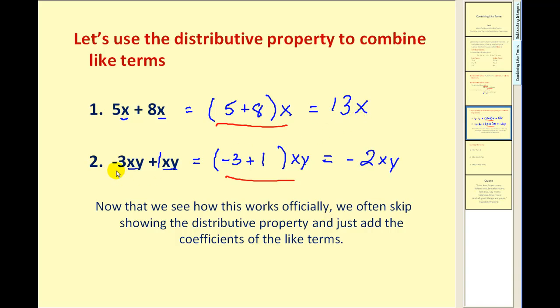In this problem negative three plus one would give us the negative two and the variable part stays the same. And that's an important part though, that the variable part will never change when you're adding or subtracting like terms.